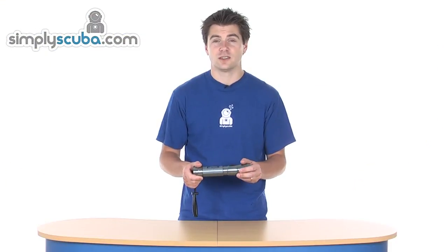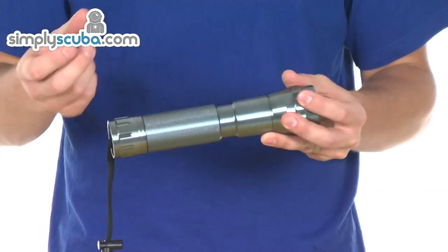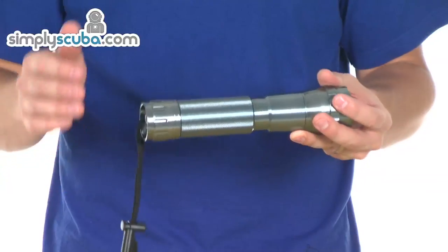It's powered by six AA batteries, not supplied with the torch though. They're encased in a little carriage that you can slide in and out nice and easy, and they're protected by a double O-ring system.